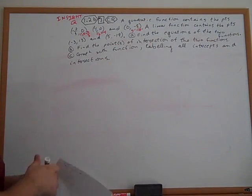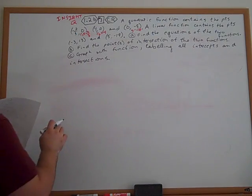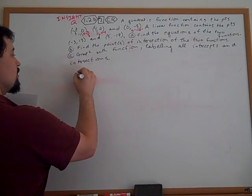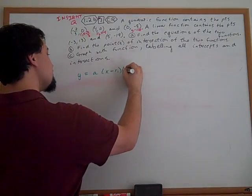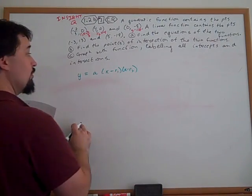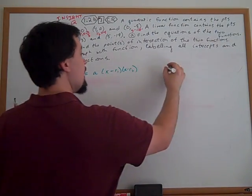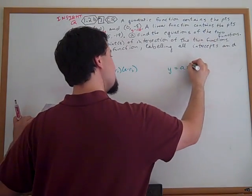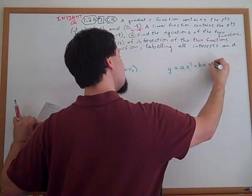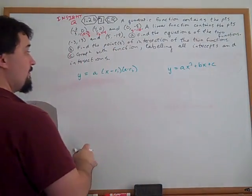So there are two different forms that should come to mind. We have y equals a, x minus r1, x minus r2, that's our root form, as you'll recall, and then we can also use y equals a x squared plus bx plus c, our standard form.